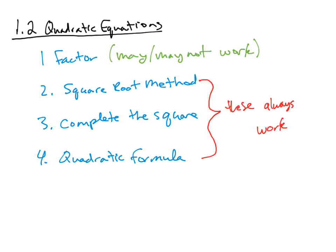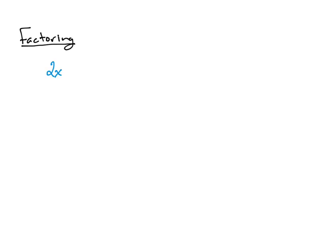Let's go through an example that looks at each of these different methods. Consider 2x squared plus 5x equals 3. A quadratic equation is an equation that has an equal sign where the variable is getting squared. To solve a quadratic equation, we typically want to set this equal to zero first. So, 2x squared plus 5x minus 3 is equal to zero.